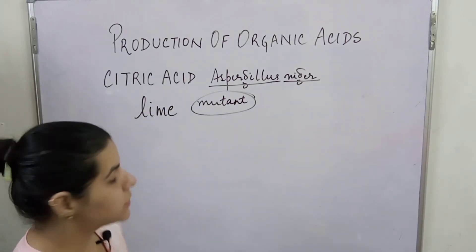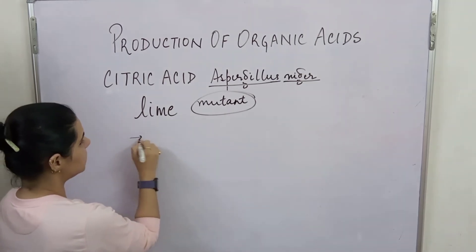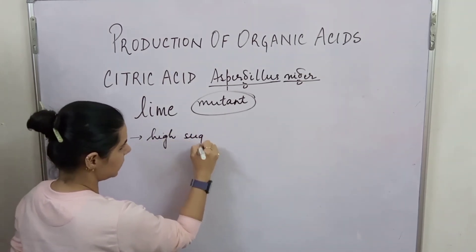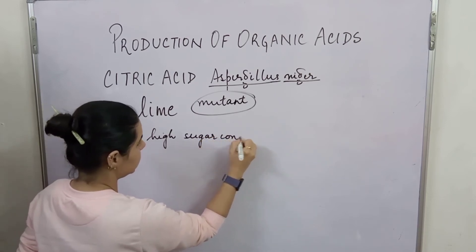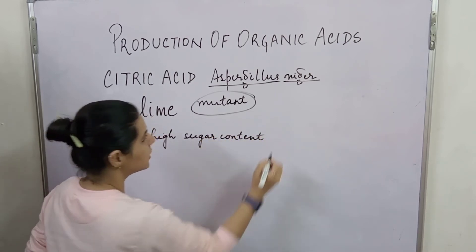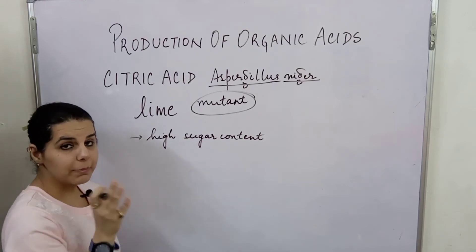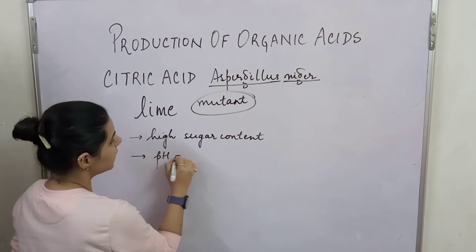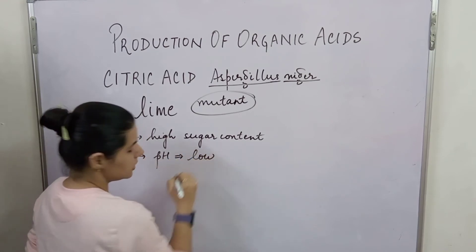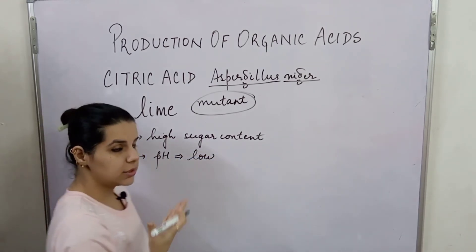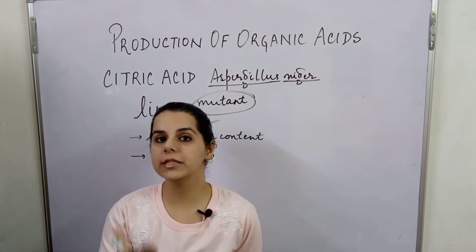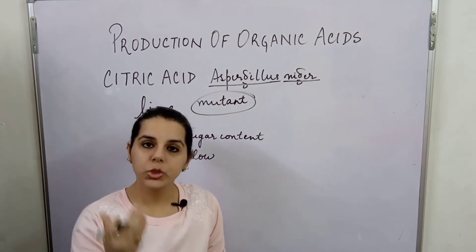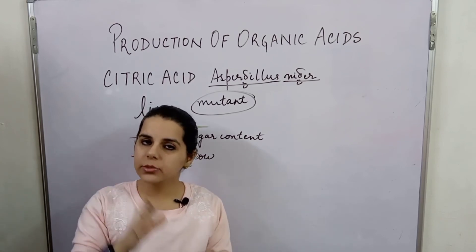This mutant strain has the advantage that it can bear high sugar content compared to the original Aspergillus strain. In addition, it is able to survive at a low pH of 2.5 or below.